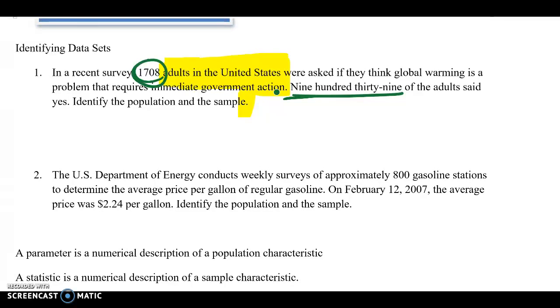Number two: The U.S. Department of Energy conducts weekly surveys of approximately 800 gasoline stations to determine the average price per gallon of regular gasoline. On February 12, 2007, the average price was $2.24 per gallon. Identify the population and the sample. Like number one, the population will be all the gasoline stations. The sample will be 800. There will be the sample.